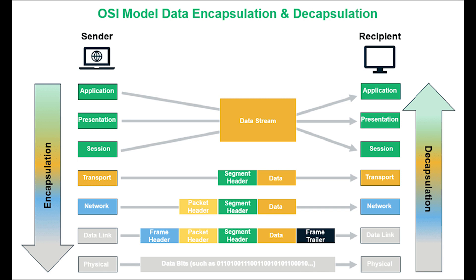Adding protocol information to the data as it passes through the layers is known as encapsulation, and removing protocol information from the data as it passes through the layers is known as decapsulation. Data is created in the application layer — that's where all the interaction happens — and is then passed to the transport layer.